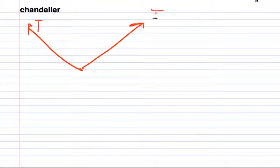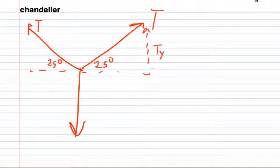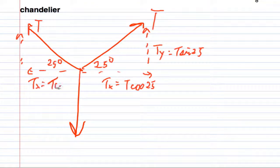Tension, tension, and weight. 25 degrees, 25 degrees. Excellent. Now what I want to do is I'm going to split this into x and y components. So I have Ty is going to be equal to T sine of 25. And Tx equals T cosine of 25. Same in this direction. I have to split up this left tension into two. So I have Tx equals T cosine of 25. And Ty equals T times the sine of 25.